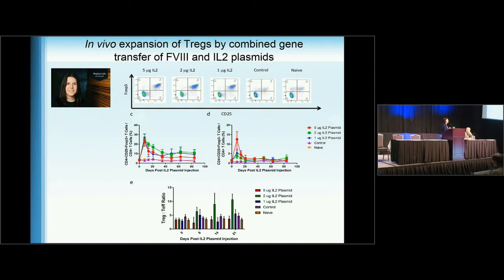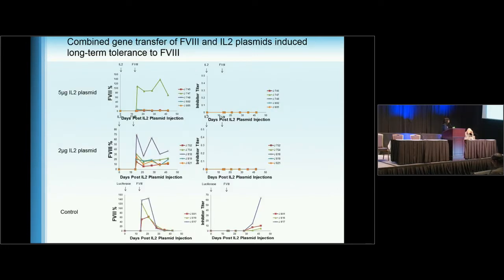To bring this to the clinic, my lab recently used a low-dose IL-2 strategy, because Treg cells have high-affinity receptors for IL-2. With low dose, it actually increases Treg proliferation much more potently than effector T-cells. The strategy we use is a combination of factor VIII plasmid transfer together with an IL-2 plasmid. With two micrograms of these plasmid transfers, the Treg-to-T-effector ratio was significantly increased, and we can achieve therapeutic levels of factor VIII expression for a very long time.